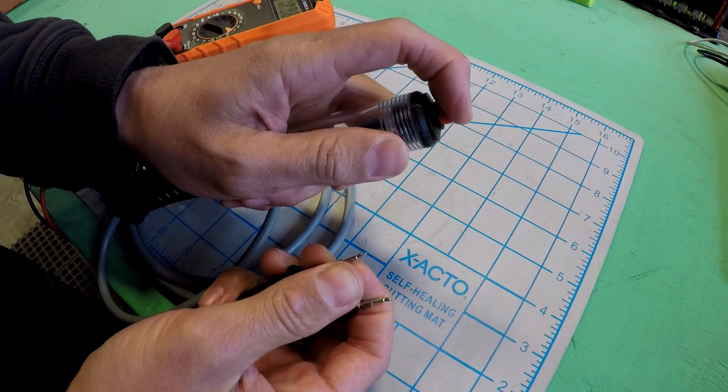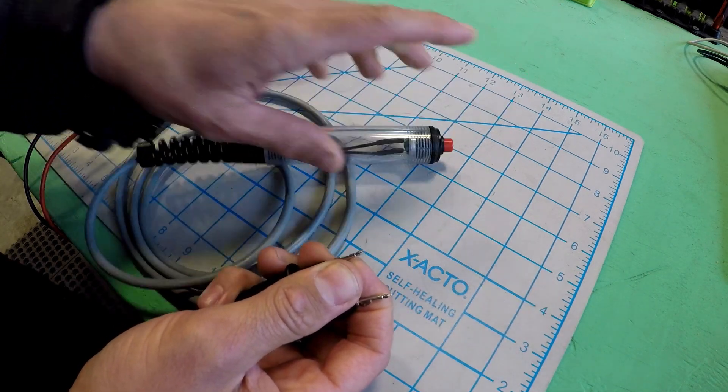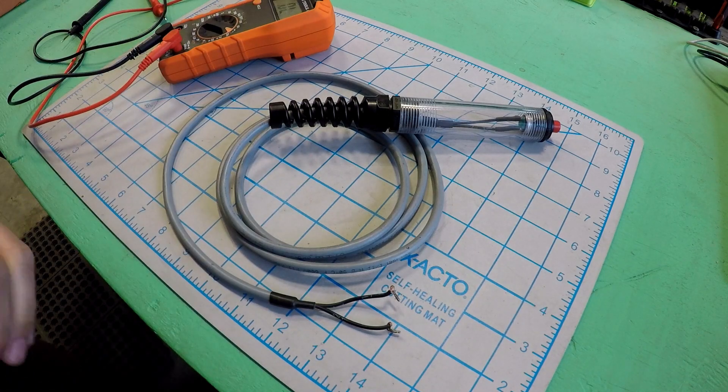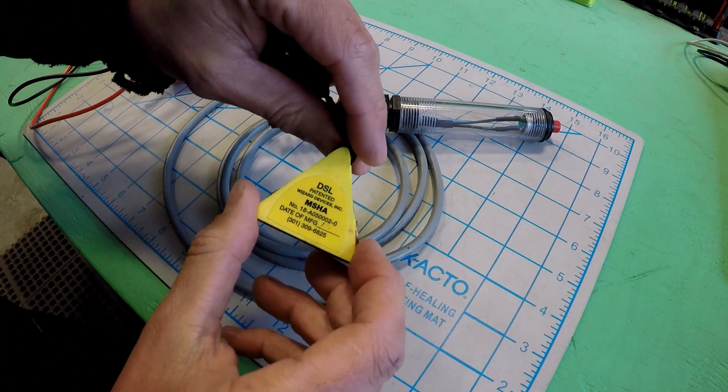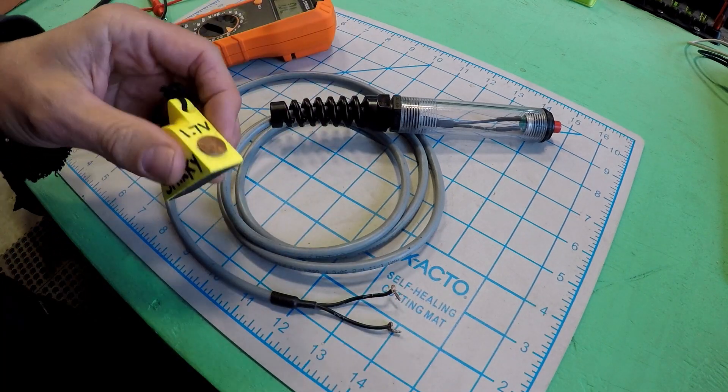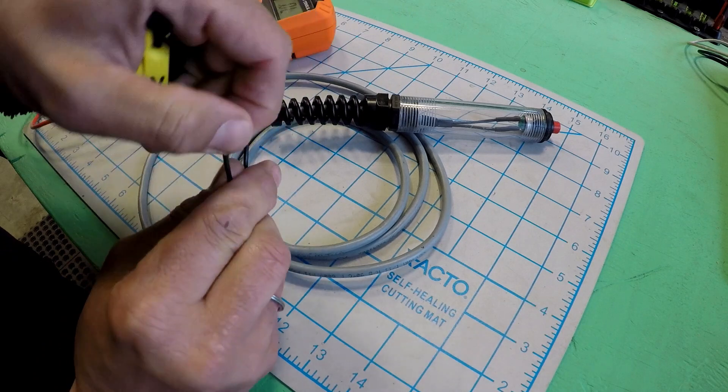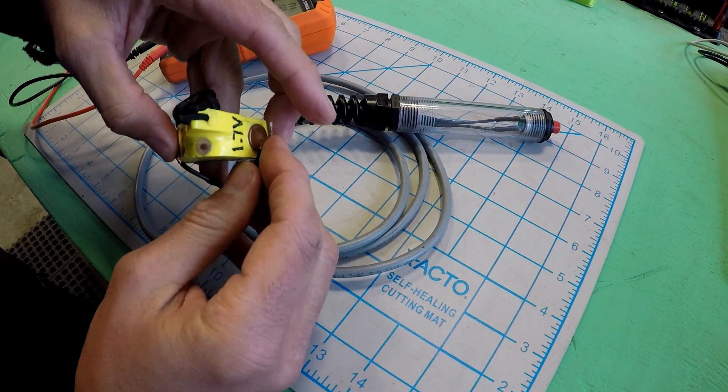The other way that you could test continuity is with a little device like this. This is a DSL made by Wizard Devices, sold by Roger George. This is similar in fashion, but instead of making a sound it turns on a small red LED to let you know that you have a complete circuit.